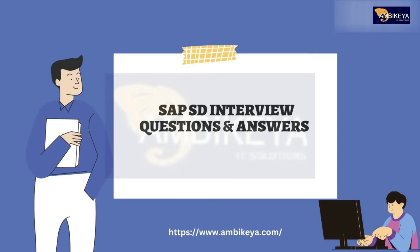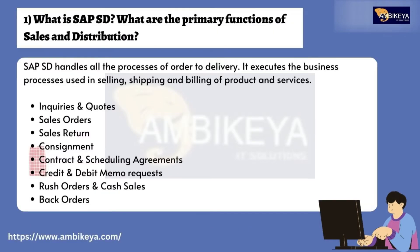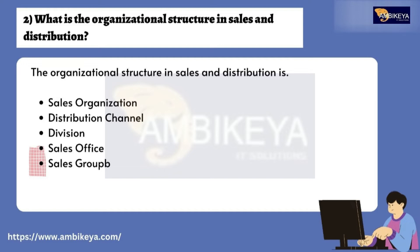Question number one: What is SAP SD and what are the primary functions of Sales and Distribution? SAP SD handles all the processes of order to delivery. It executes the business processes used in selling, shipping, and billing of products and services — including inquiries and quotes, sales orders, sales returns, consignment, contracts and scheduling agreements, credit and debit memo requests, rush orders, cash sales, and back orders.